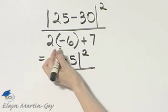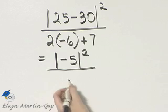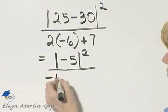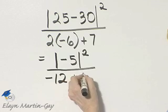In the denominator, I have multiplication and I have addition, so we will multiply first. 2 times negative 6 is negative 12, and then plus 7.